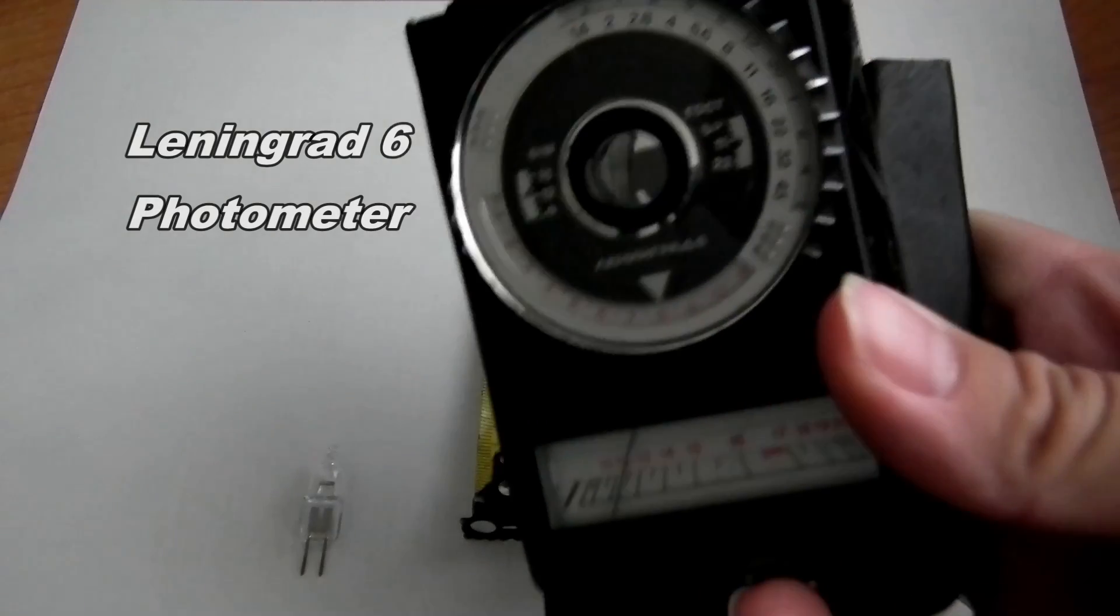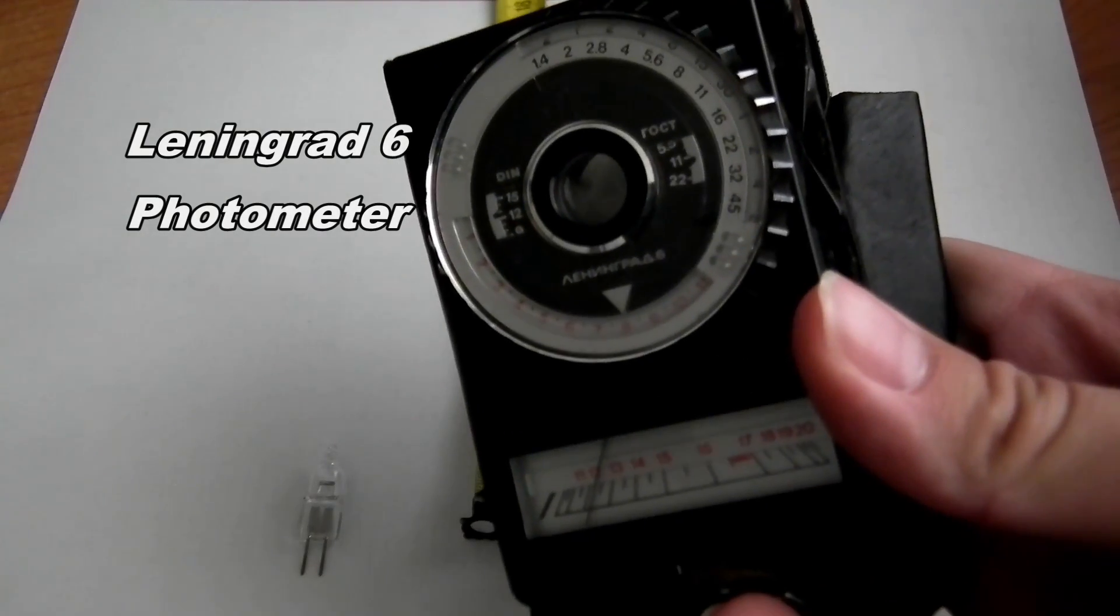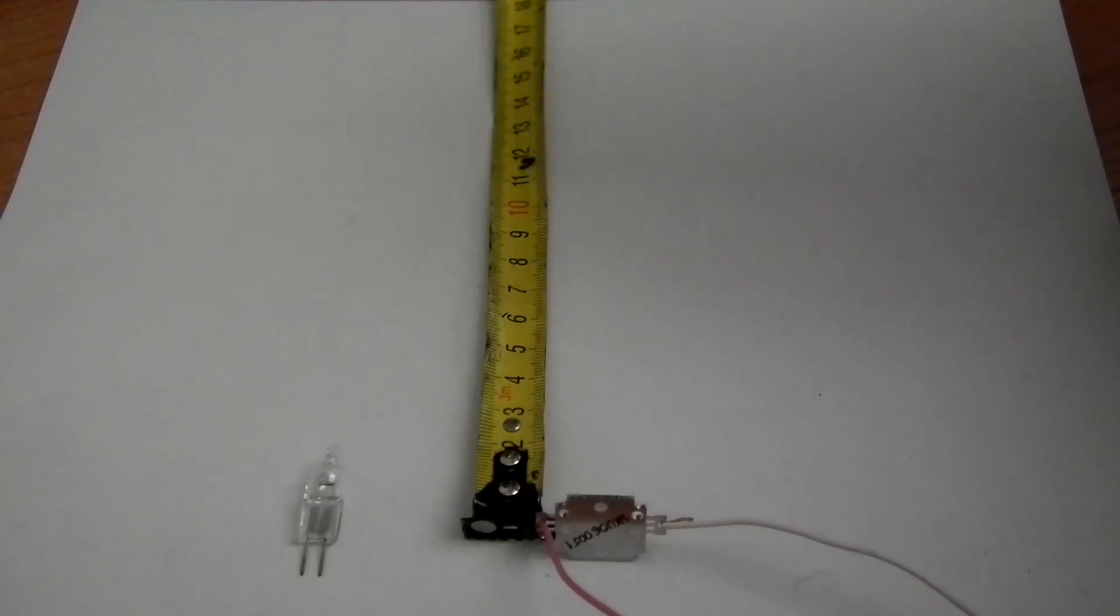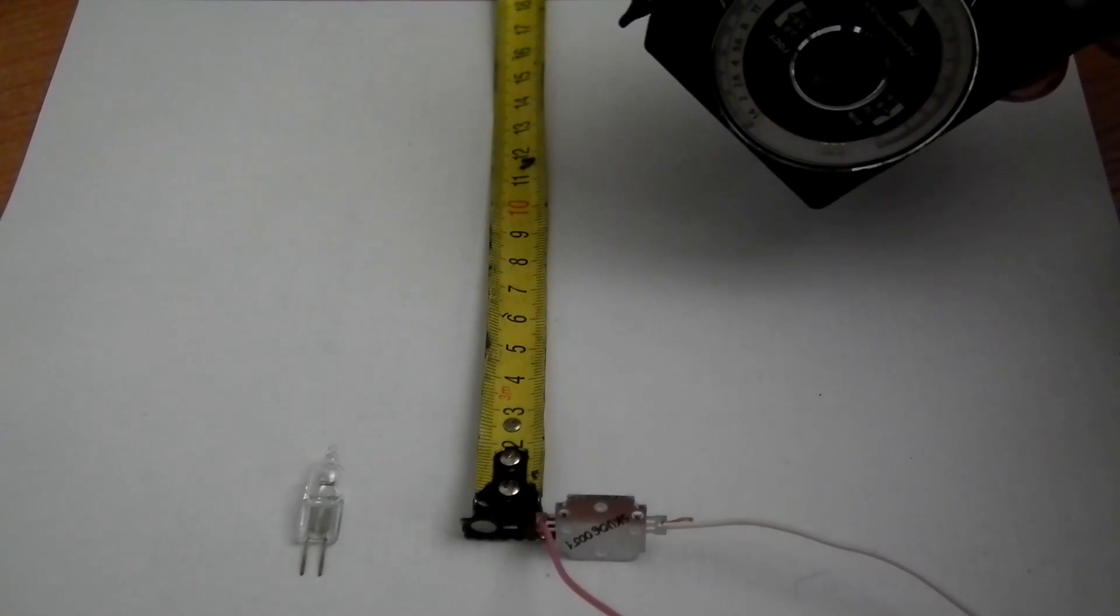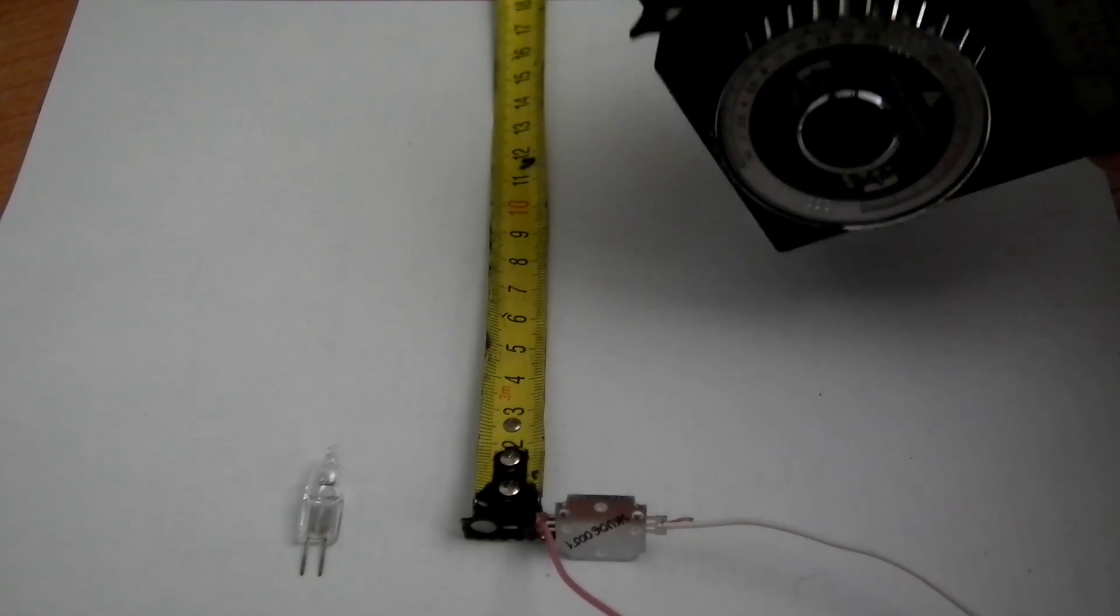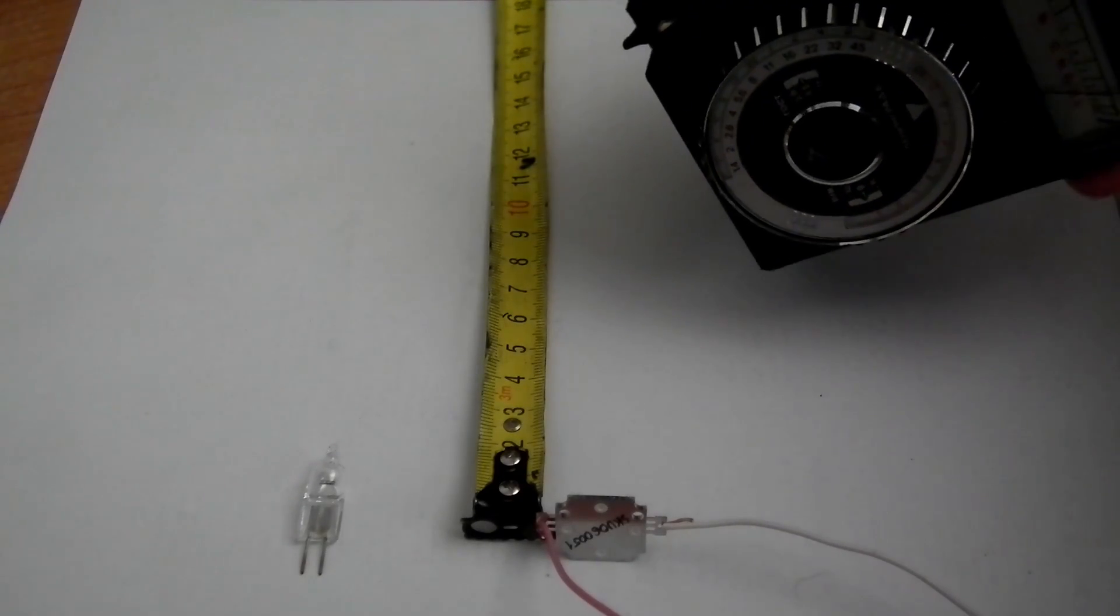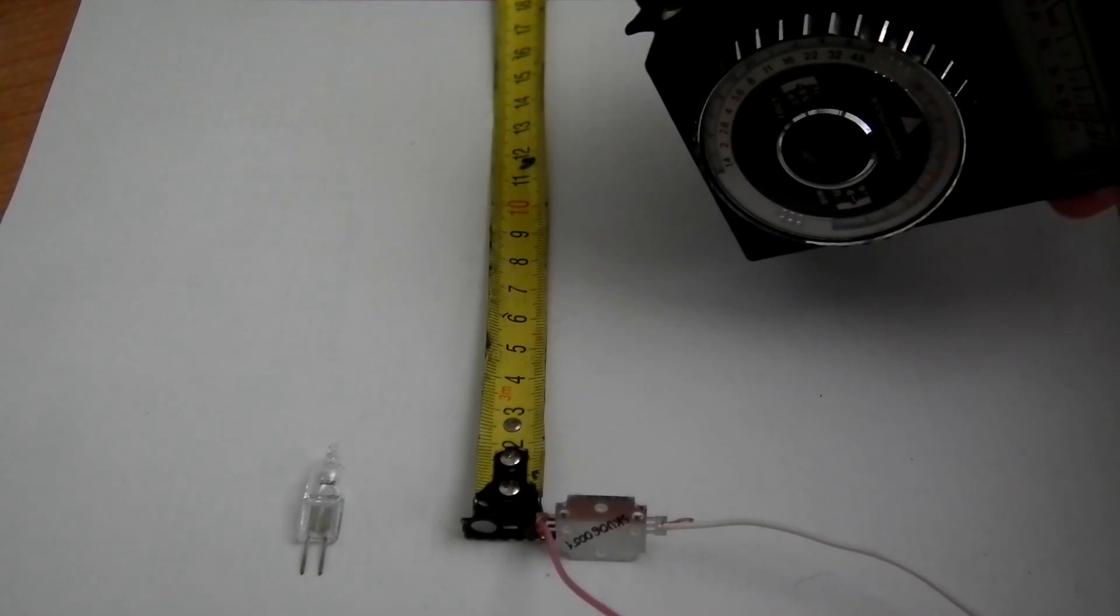I tested the diodes with my Soviet photometer, Leningrad 6, with a photocell based on cadmium sulfide that was used in analog photography in the 1970s. First, I measured light in normal daylight conditions.